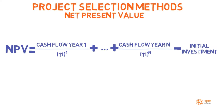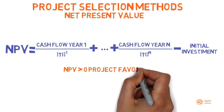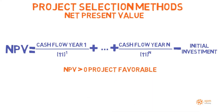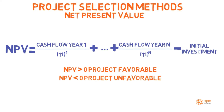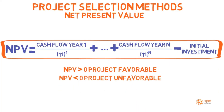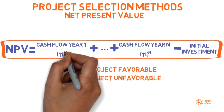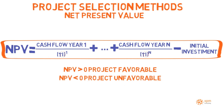Once calculated, the NPV supports a rapid interpretation of the project return. If the net present value is greater than zero, the project is favorable, adding value to the organization. If the net present value is less than zero, the project is unfavorable. You do not need to know how to calculate the net present value — you just need to understand the concept. However, if you are curious about the subject, the net present value formula is shown on screen, where I stands for discount rate and N for number of years.